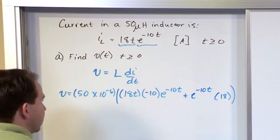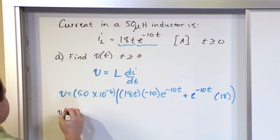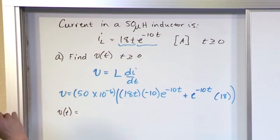This thing is the derivative di dt. That's what that is. So all we need to do to find the answer is to simplify this. And so what we're going to get is v of t, voltage as a function of time.